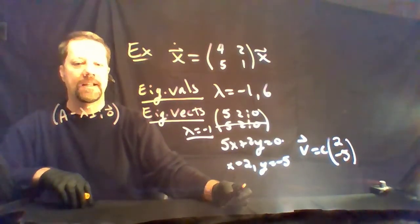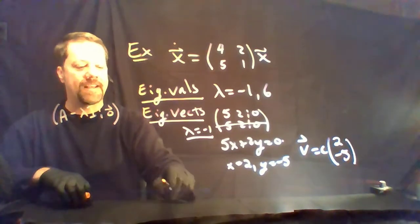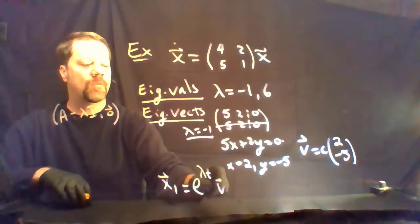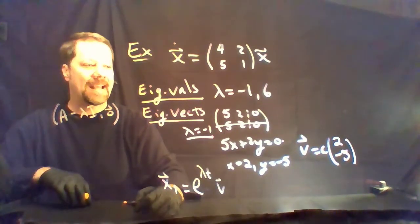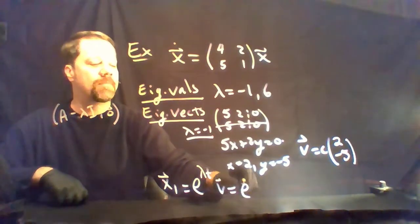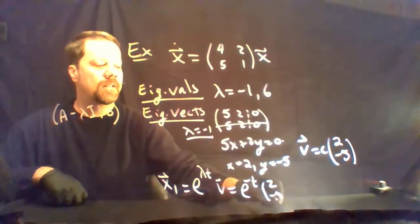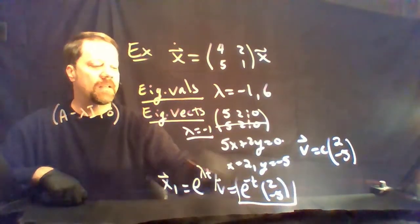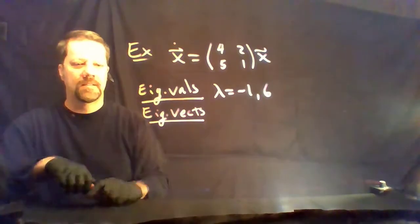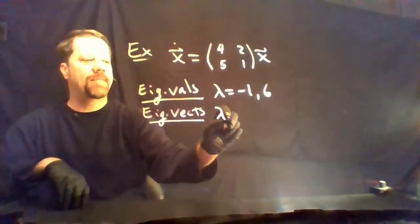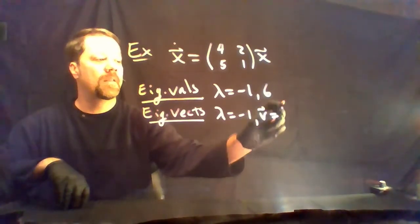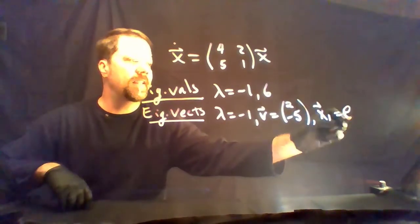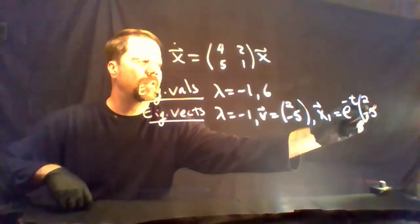We can choose c equals 1 in constructing our solution. Solutions are of the form e to the lambda·t times v, where v is an eigenvector and lambda is an eigenvalue. This gives us x1 equals e to the minus t times (2, -5). So lambda equals negative 1 gives v equals (2, -5), and one solution is e to the minus t times (2, -5).